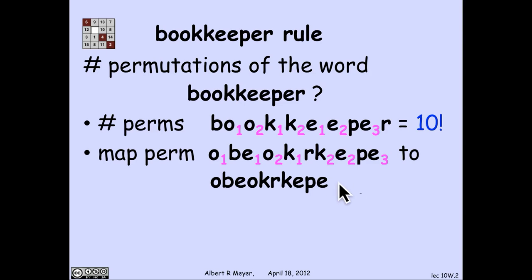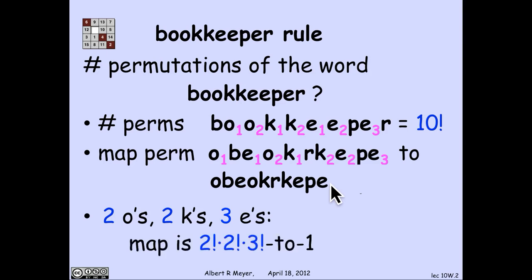If I want to count the number of unsubscripted permutations, then I figure out that this mapping is k to 1, and I'm going to divide by k. How many subscripted words map to this given pattern? The subscripts on the o's don't matter, so there's two possible orders. Subscripts on the k's don't matter, two possible orders. Subscripts on the e's don't matter, three factorial possible orders. The net result is that with two o's, two k's, and three e's, the mapping is 2 factorial by 2 factorial by 3 factorial to 1.